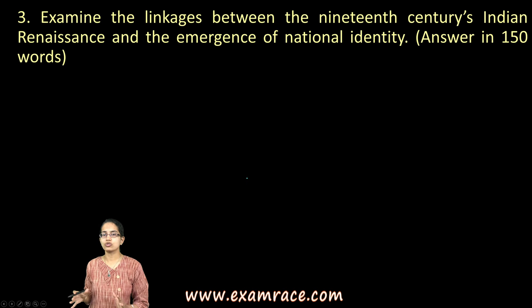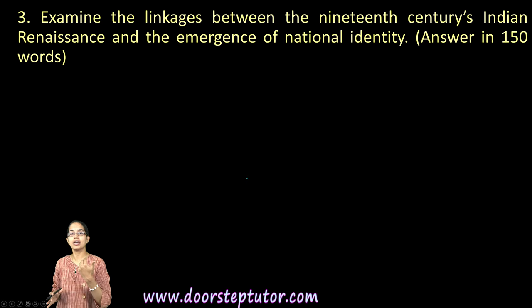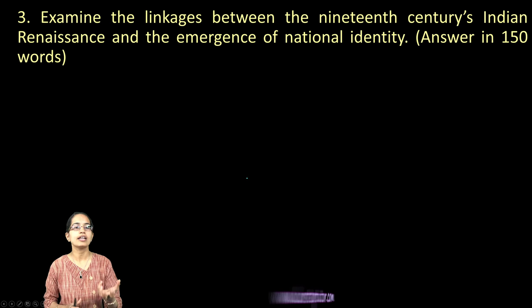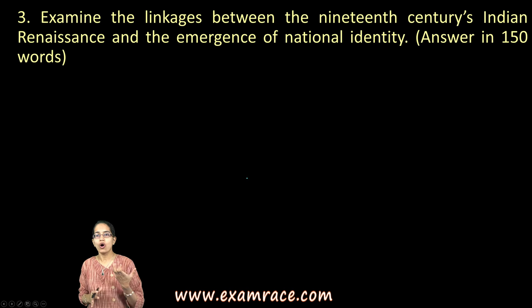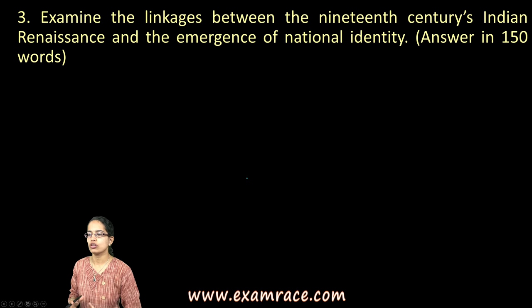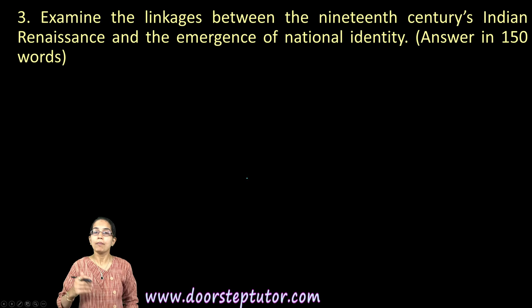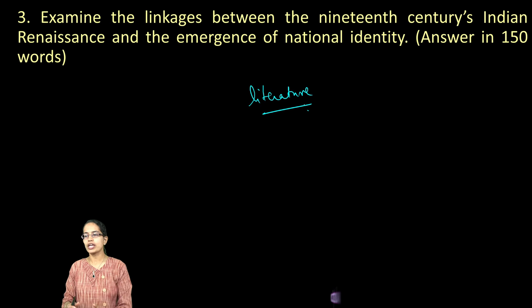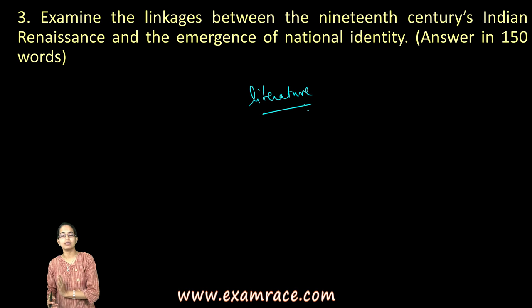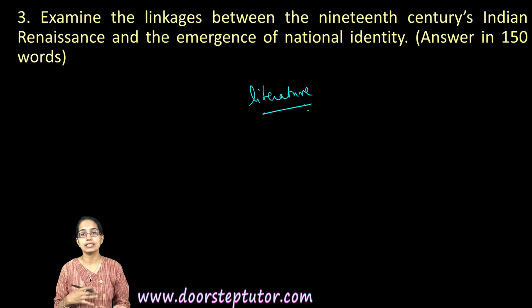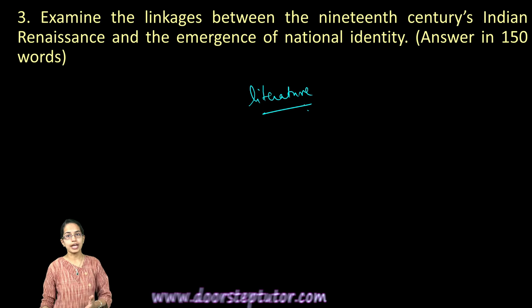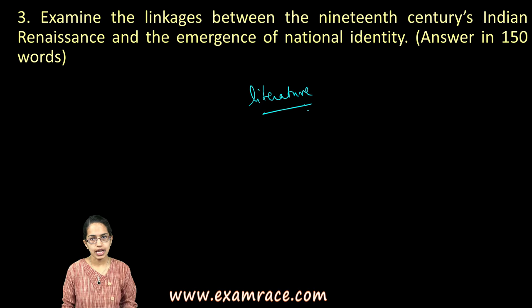Reformers like Dayanand Saraswati and Ishwarchandra Vidyasagar were major figures who led to the emergence of national identity on a secular and socialist basis. This was not just confined to social upbringing — it also included new ideas in literature and classical music, which superseded Western music. Contributions from Bankimchandra Chattopadhyay, Tagore, and Iqbal brought in a broader national identity.